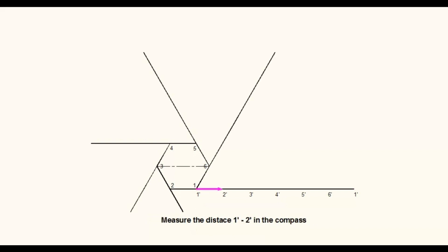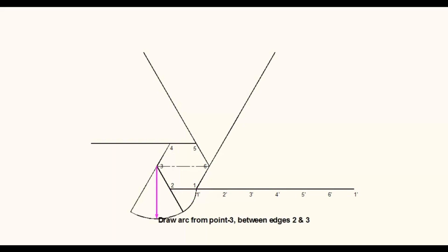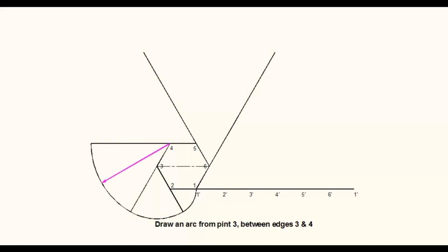Measure the distance of 1-dash to 2-dash on the horizontal line. With corner point 2 as center, draw an arc between edges 1 and 2. Measure the distance of 1-dash to 3-dash on the horizontal line. With corner point 3 as center, draw an arc between edges 2 and 3. Measure the distance of 1-dash to 4-dash on the horizontal line. With corner point 4 as center, draw an arc between edges 3 and 4.